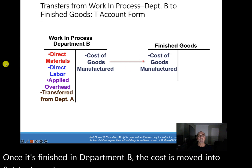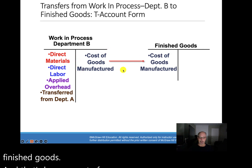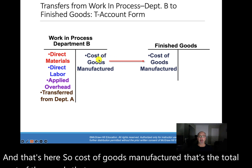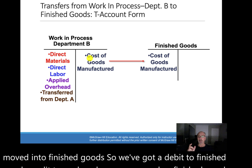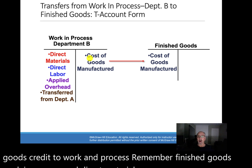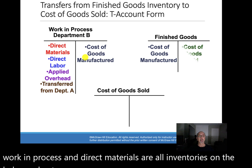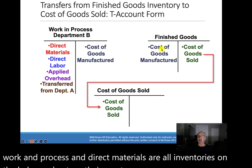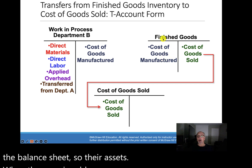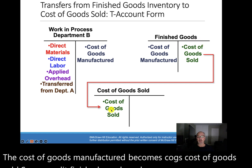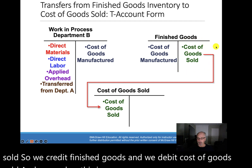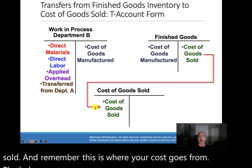The cost of goods manufactured — the total cost of goods completed in Department B — is moved into finished goods. So we have a debit to finished goods and a credit to work in process. Remember, finished goods, work in process, and direct materials are all inventories on the balance sheet, so they're assets. When the soup is sold, cost of goods manufactured becomes cost of goods sold. We credit finished goods and debit cost of goods sold — this is where your cost goes from the balance sheet to the income statement.